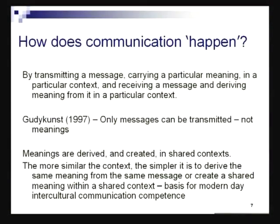How does communication happen? On a very basic level, communication happens by transmitting a message that carries a particular meaning in a particular context, and receiving a message and deriving meaning from it in a particular context. It is not just a transference and reception of signals — it is communication encased in context.